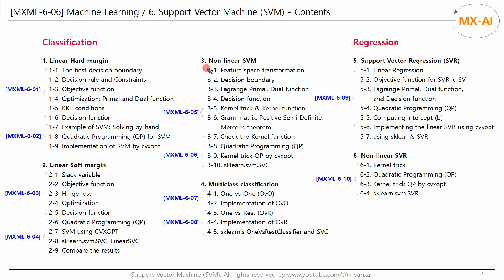In the last video we looked at the basic algorithm for non-linear SVM. We created a non-linear decision function using the kernel trick and kernel function. In this video we will solve the QP problem of the Lagrangian dual function for non-linear SVM, generate a decision function, and predict the class of the test data. We will implement this from scratch using CVXopt, then implement it using scikit-learn's SVC and compare the two results.